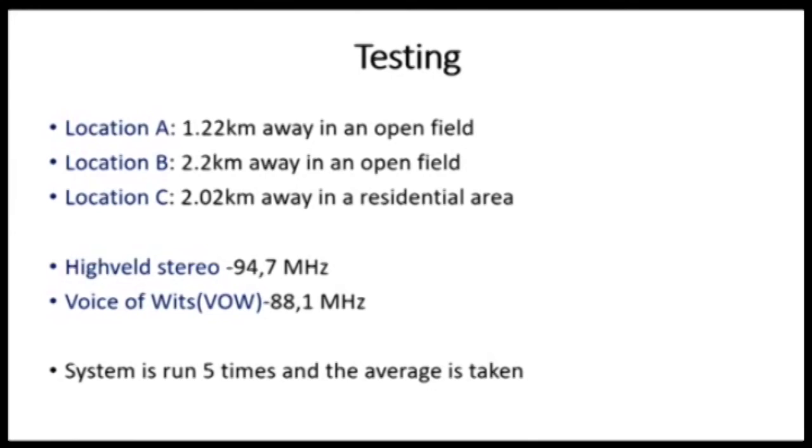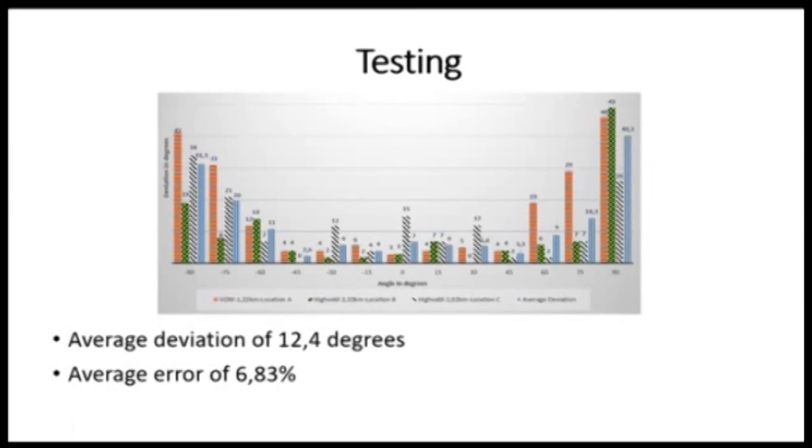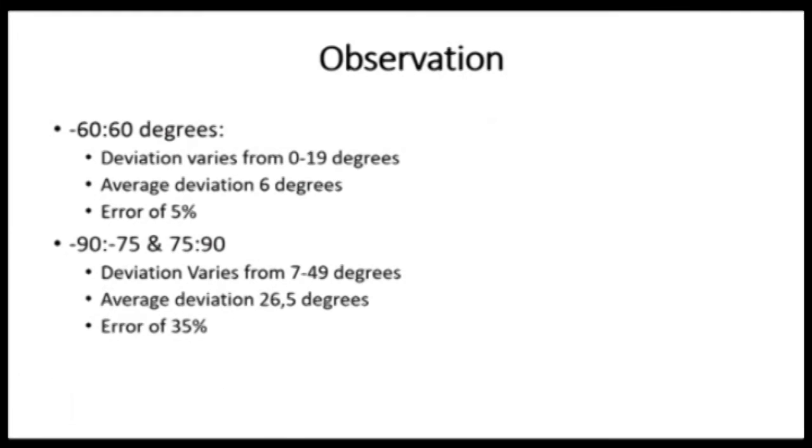Testing is performed on the system in three different locations, two of which are in an open field and one in a residential area. Two radio stations are retrieved and the average of five trials is taken. The deviation from the true angle and the average of the three deviations are displayed in the graph as shown. The overall system has an average deviation of 12.4 degrees and an error of 6.83%.